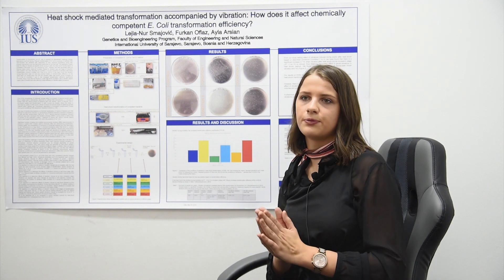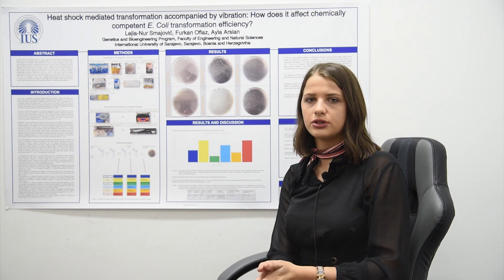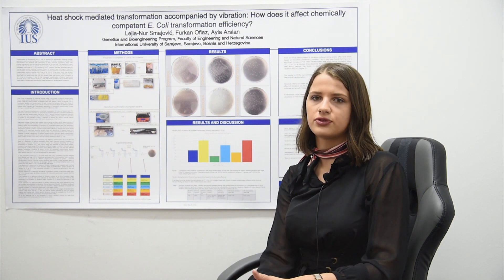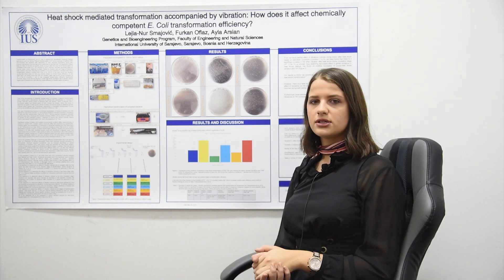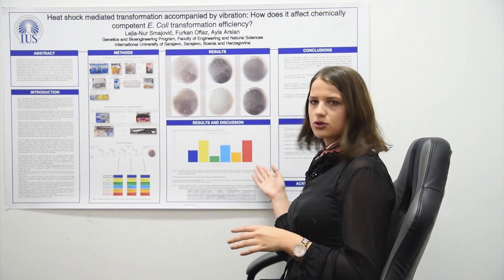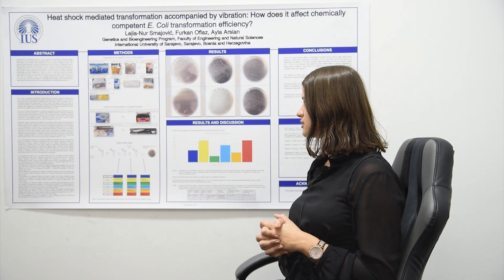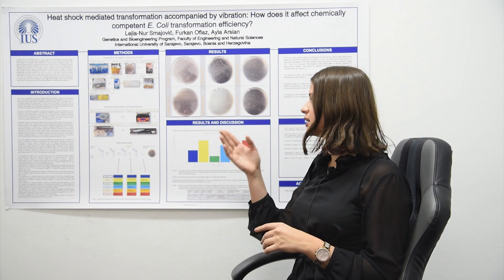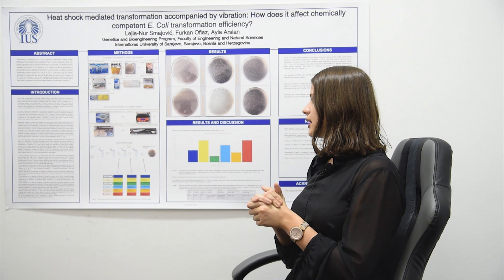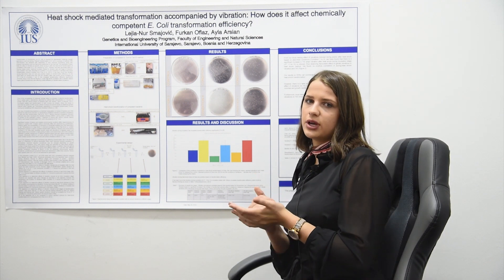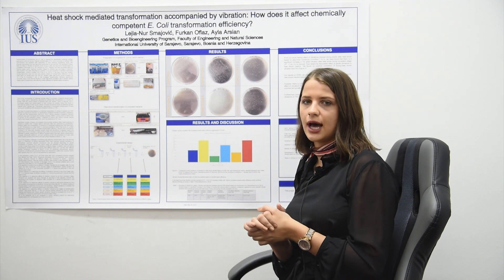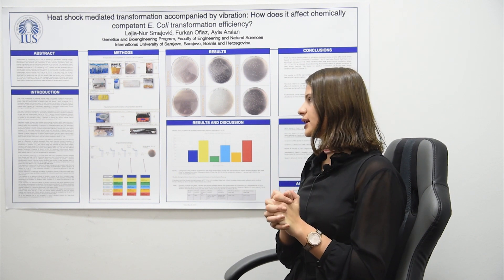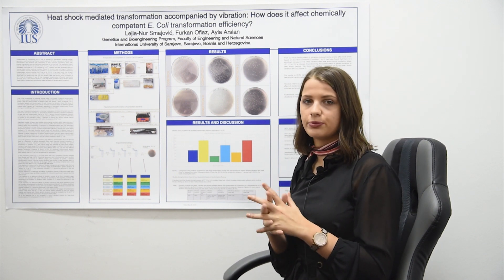I used one bacterial strain and one bacterial type and I optimized those conditions to yield the highest transformation efficiency possible. The results are shown best in the graph, where I found that there is a statistically significant difference when vibrations during the incubation phase are induced at 37 degrees for one hour — that is where the gentle vibrations have the highest effect on this bacterial strain to achieve the highest transformation efficiency.